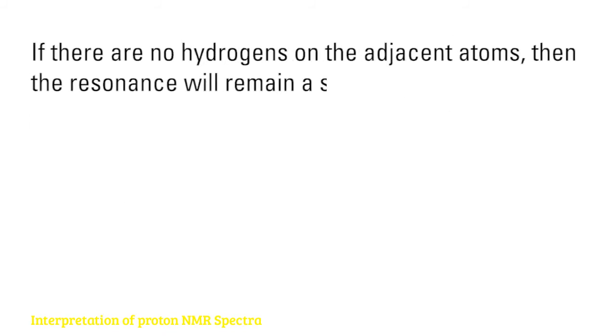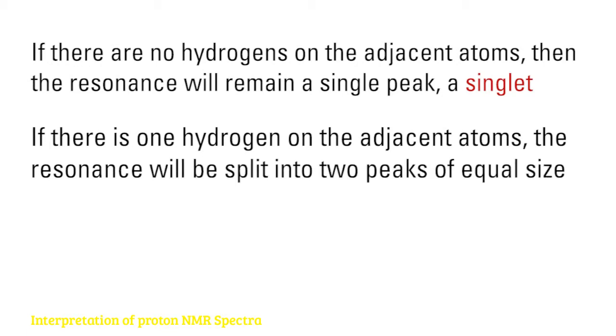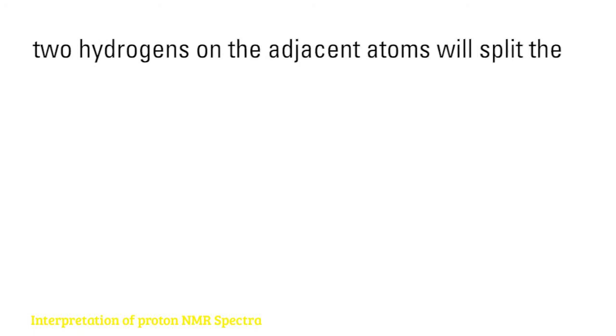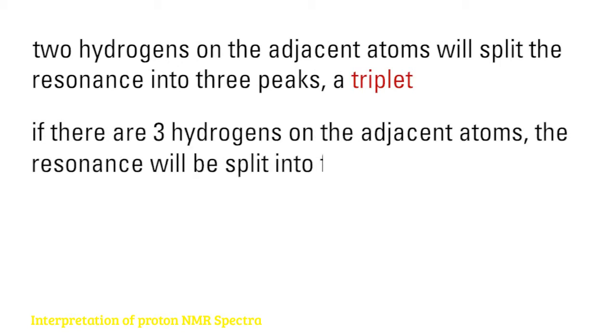If there are no hydrogens on the adjacent atoms, then the resonance will remain a single peak, a singlet. If there is one hydrogen on the adjacent atoms, the resonance will be split into two peaks of equal size, a doublet. Two hydrogens on the adjacent atoms will split the resonance into three peaks, a triplet. If there are three hydrogens on the adjacent atoms, the resonance will be split into four peaks, a quartet.